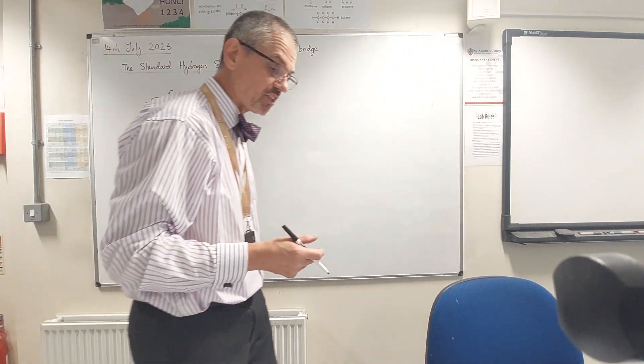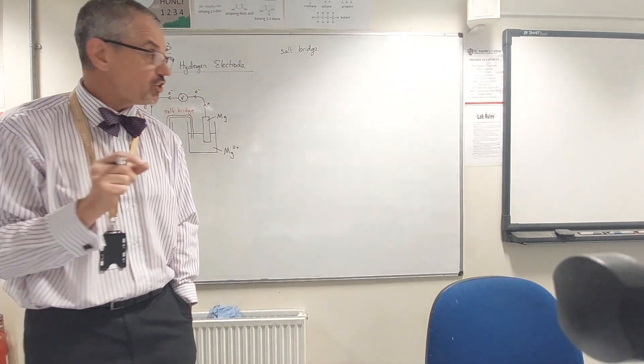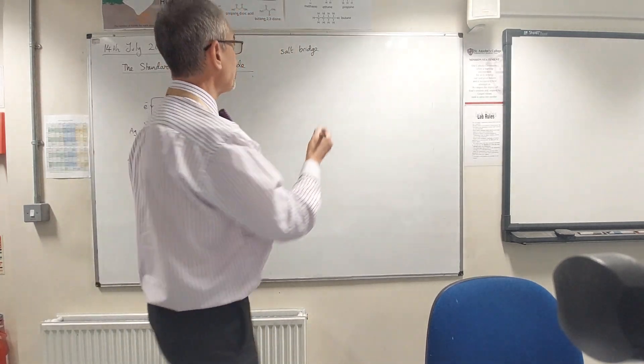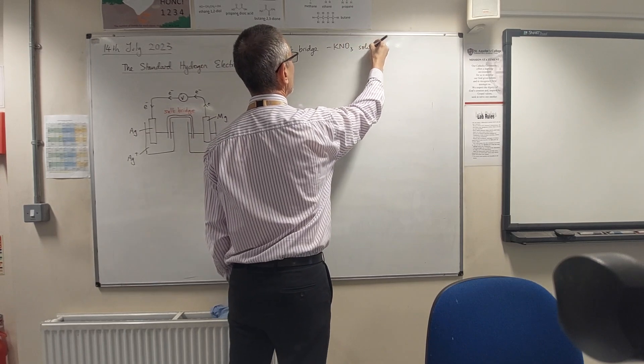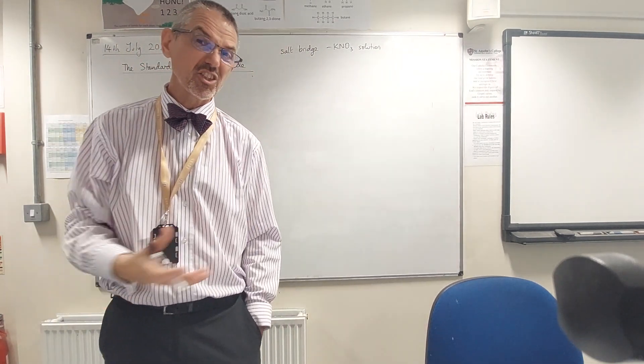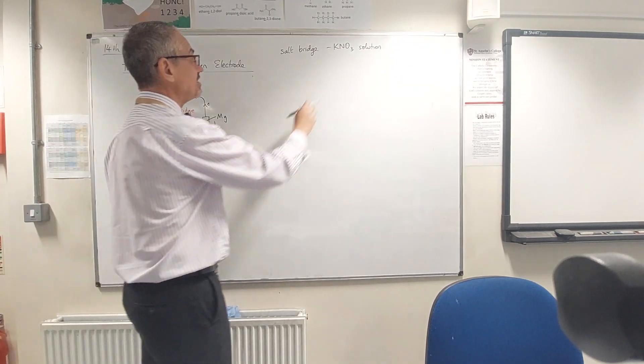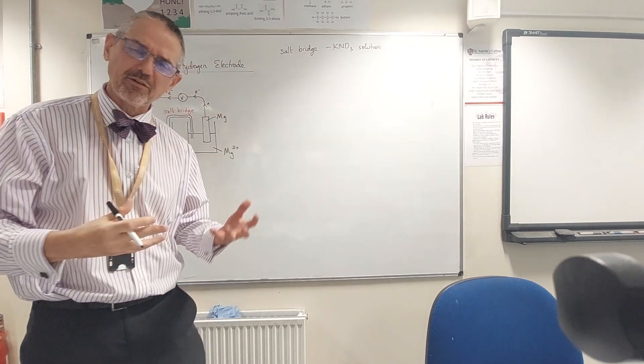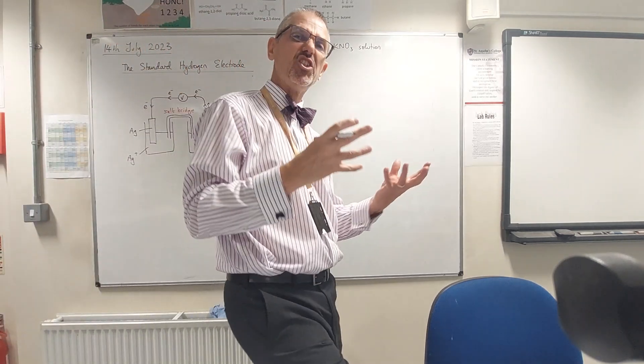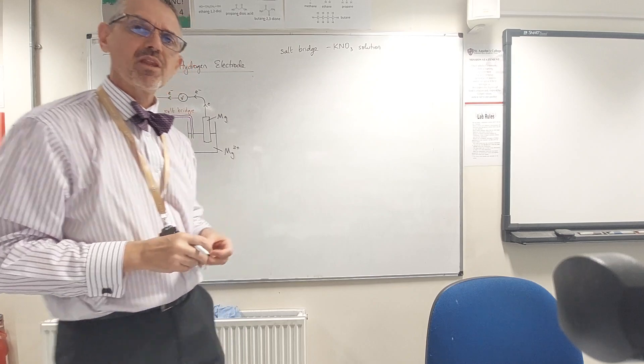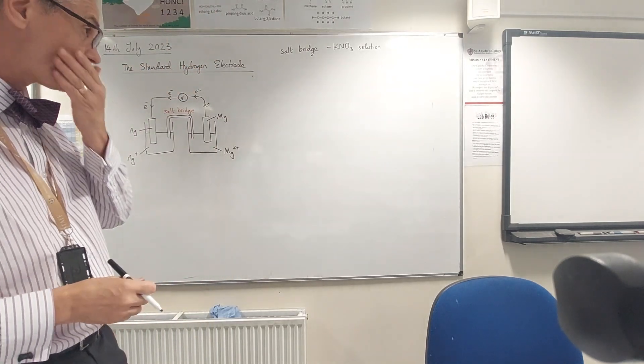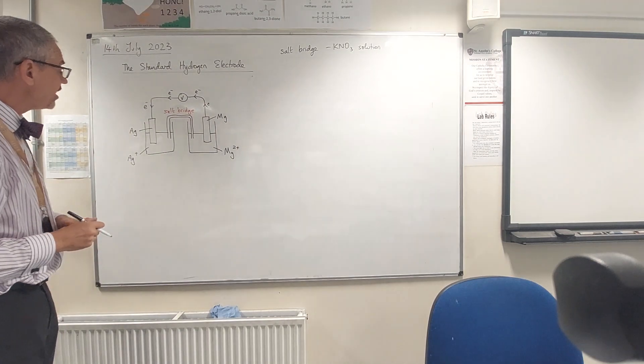Salt bridges - you can buy salt bridges - they're thin glass tubes and they're usually filled with a special gel, and then the gel is infused with potassium nitrate solution. Why potassium nitrate? Because all potassium compounds and all nitrates are soluble. What you don't want is ions getting into your salt bridge and precipitating because that would clog it up. Your ions wouldn't be able to flow and nothing would work. So that's the salt bridge.